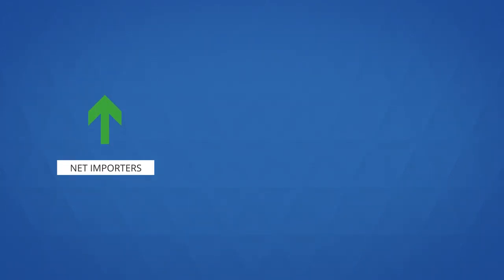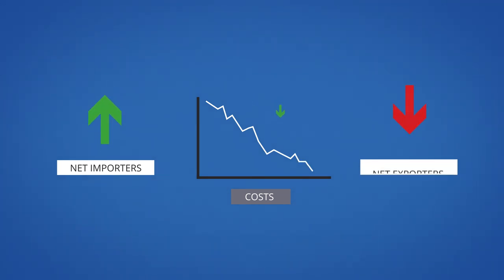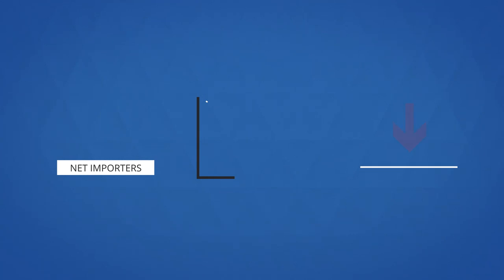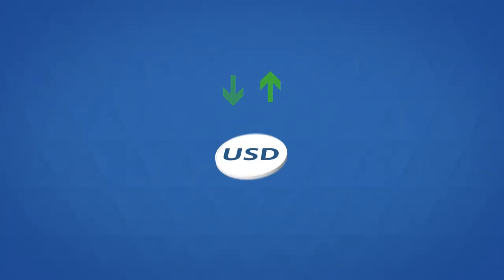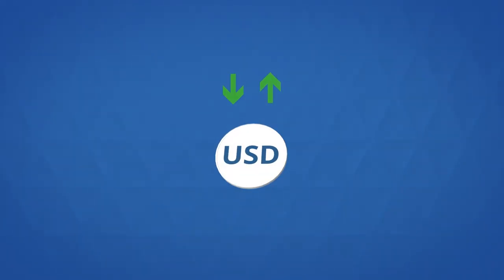As a result, the stocks of net importers might increase in value as their costs go down, whilst those of net exporters may decrease as their profits fall. The value of the U.S. dollar in particular can have a strong effect, as commodities are typically priced in this currency.